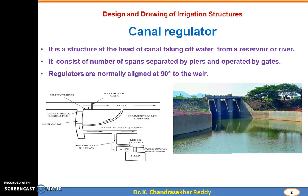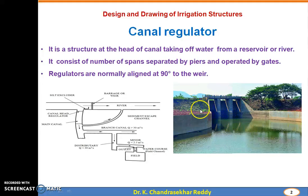The next design is the design and drawing of irrigation structures — specifically the Canal Regulator. It is a structure at the head of the canal taking water from a reservoir or river. From here we can supply water to the network of canals either from the reservoir, back side of the dam, or a perennial river. It consists of a number of spans separated by piers and operated by gates. Regulators are normally aligned at 90 degrees to the weir. To withdraw water from the river or reservoir, a shutter operating system is used between two piers.